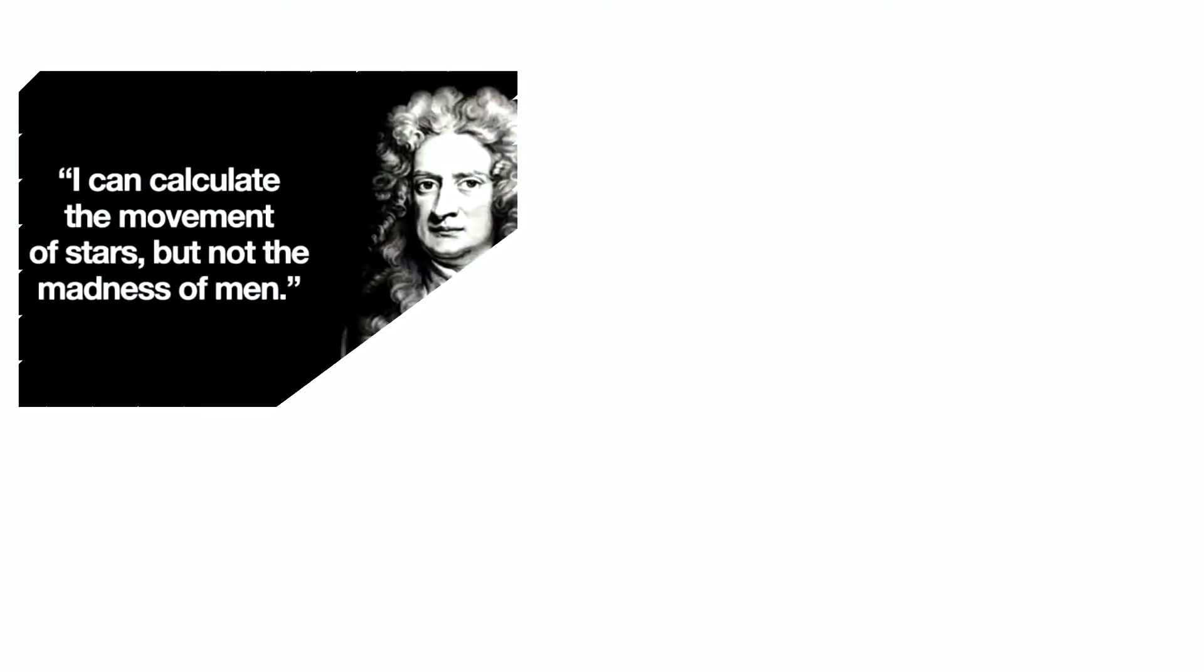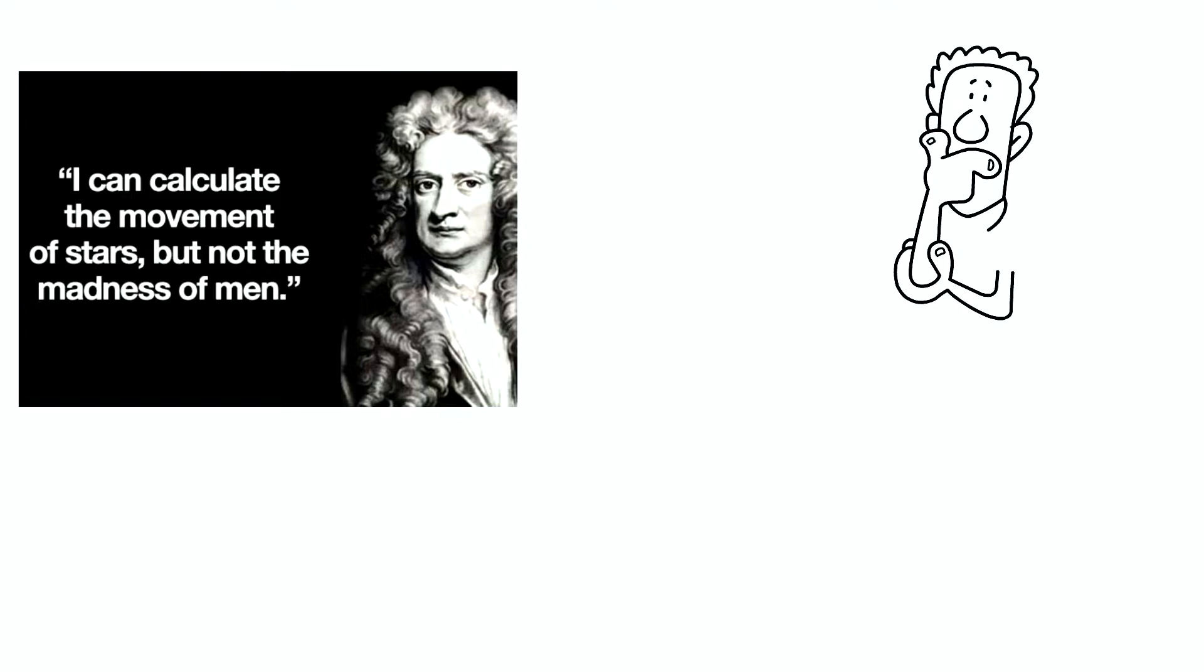Newton said, I can calculate the motions of heavenly bodies, but not the madness of people. Why did he say that? What could have happened?